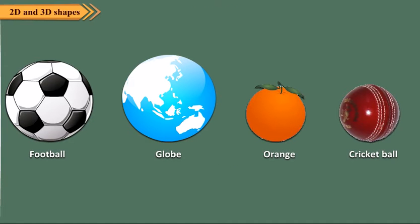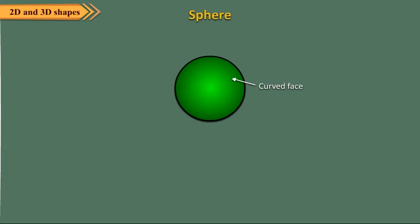Children, now take a look at the shapes of the objects shown here. Each one of these objects has the shape of a sphere. A sphere has one curved face. It has no vertex and no edge.